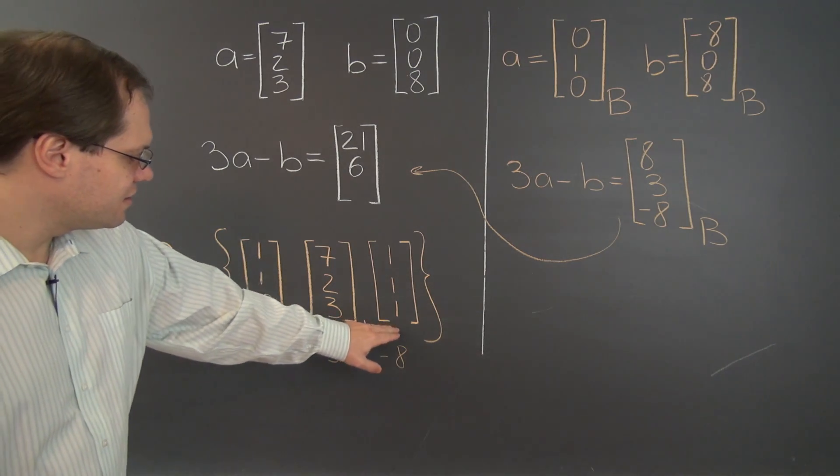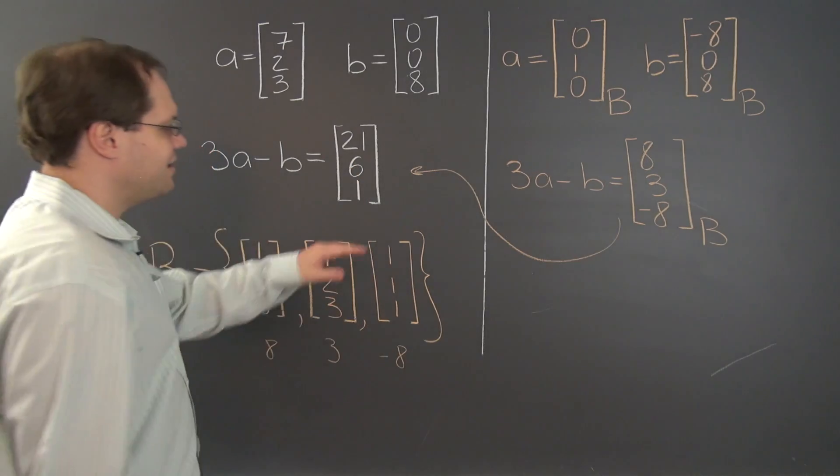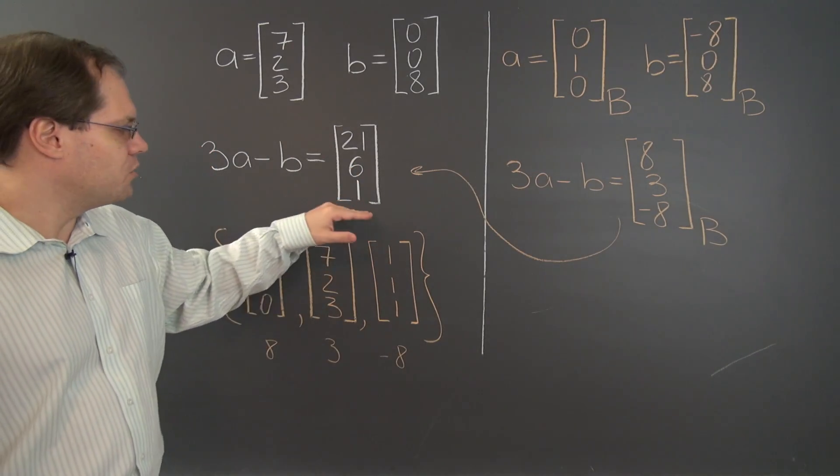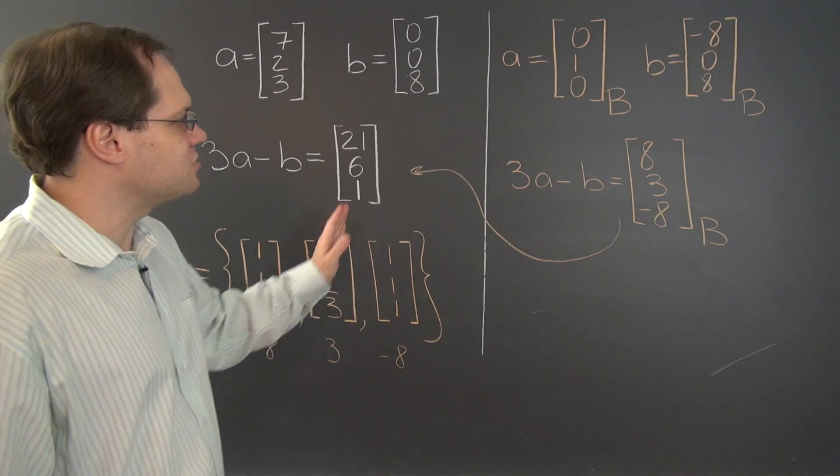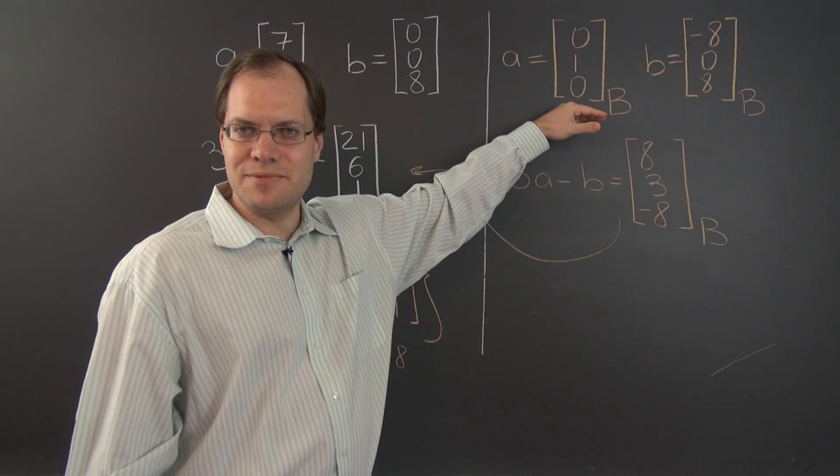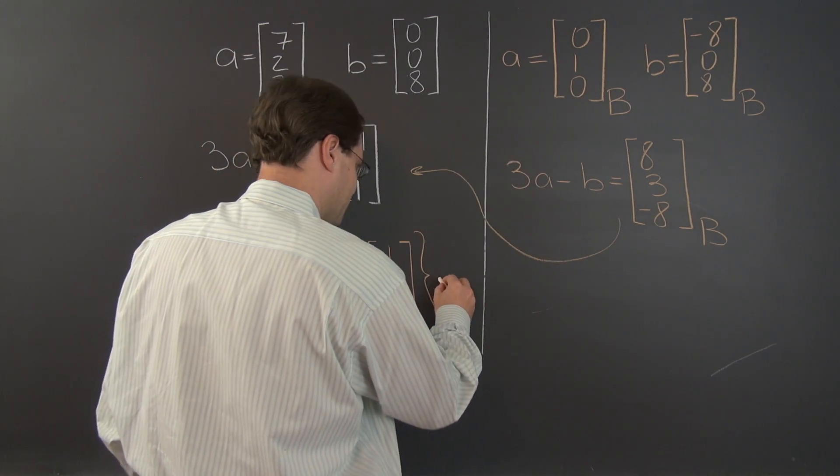And finally, 0, 9 minus 8 is 1. And that's our answer. And we once again obtain it by following a three-step journey. Pick a basis and translate all of the elements of the problem into component space. That's step number 1.